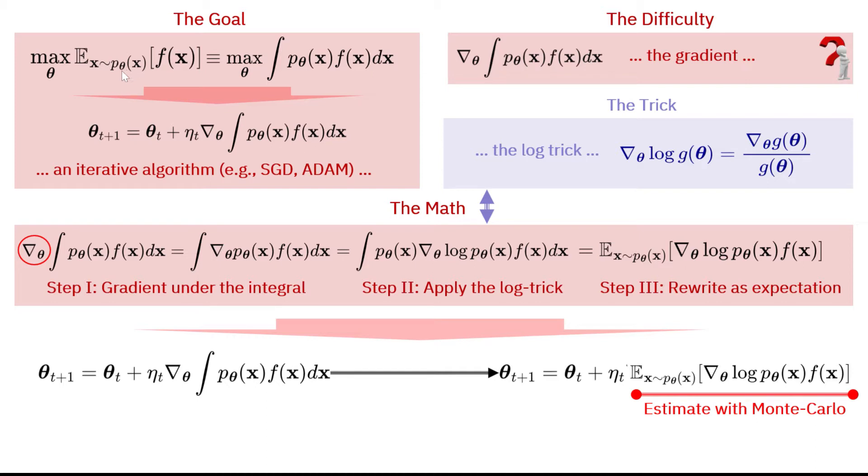p of x is parameterized by theta, and that's what makes this optimization difficult. So contrary to standard optimization, the way you sample x here depends on distribution, which itself changes over iterations as you update your parameter theta or your variable of optimization theta.